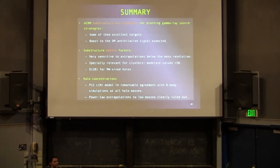I think this is my summary. Substructure, a key ingredient in planning future gamma-ray search strategies for several reasons: excellent targets and also you expect an enhancement of your annihilation signal due to the subhalos. Then regarding substructure boost factors, they are very sensitive to how you extrapolate things. We find that they are especially relevant for clusters, but we find moderate values of order 50 or so, and probably order 10 or so for Milky Way-sized halos. Regarding halo concentrations, P12 is a good concentration model that works very well in principle with all the data that we have at different halo masses. And again, the last point, the power law extrapolations are clearly ruled out in principle by data and models, physically motivated models. Thank you.